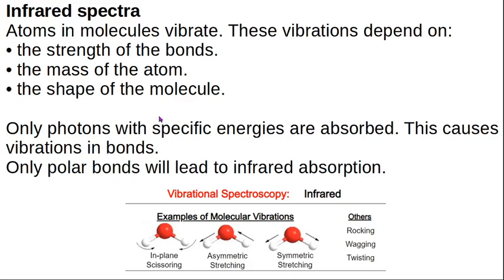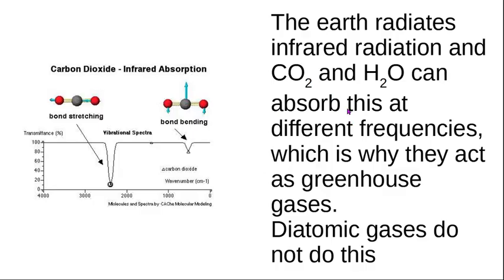If we look at spectra in infrared: infrared has got lower energy light, so it only causes molecules to vibrate. How much they vibrate depends on what kind of bonds you've got, the strength of them, how big and heavy the atoms are, and the shape of the molecule — related to valence shell electron pair repulsion theory, polarities, and dipole moments. With infrared spectra, only certain photons are absorbed, causing vibration in the bonds, and only polar bonds — like in water — can absorb infrared light.